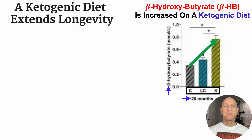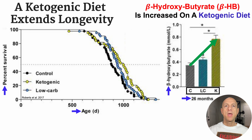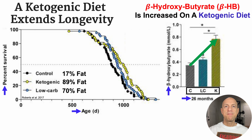That's potentially important because in this study, a ketogenic diet extended lifespan. On the y-axis, we've got percent survival plotted against age in days, with those three groups again: control diet, ketogenic, and low-carb. More specifically, the control diet was 17% fat, 89% fat for the ketogenic diet, and the low-carb diet was 70% fat — still a relatively high-fat diet, just not as high-fat as the ketogenic diet.